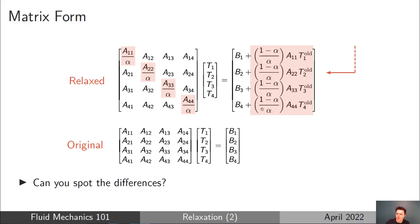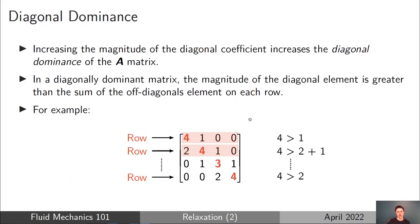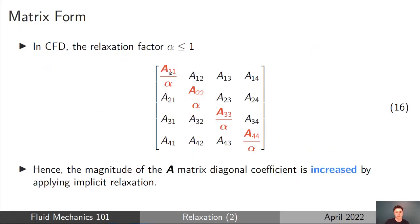Since we always use under-relaxation, alpha is always less than or equal to one. As alpha gets smaller — reduced from one to 0.9 to 0.8 down to 0.1 — the diagonal term AP divided by alpha gets larger and larger. We're artificially increasing the magnitude of the diagonal coefficient, and since the user can pick any value of alpha, this diagonal coefficient could get very large.